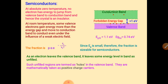Electrons leave the valence band after gaining sufficient energy and move toward the conduction band. Whenever an electron moves from the valence band to the conduction band, it leaves behind an empty position. That empty space is called a hole.